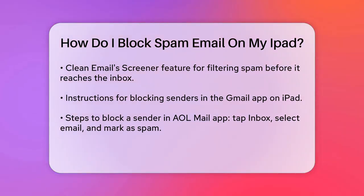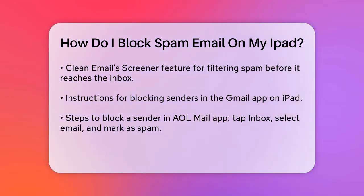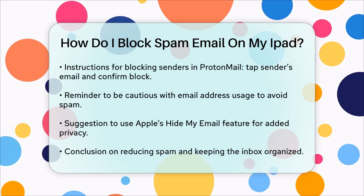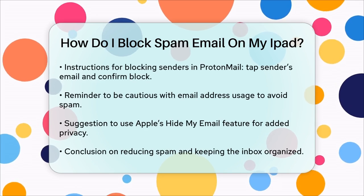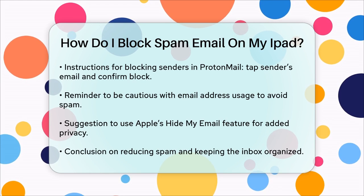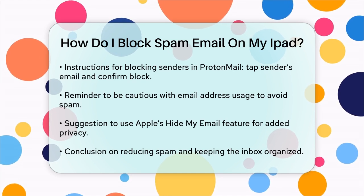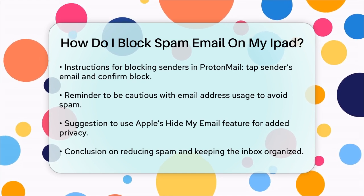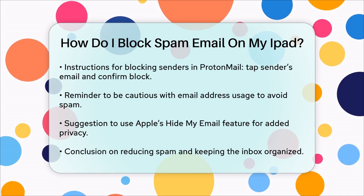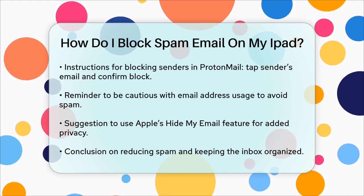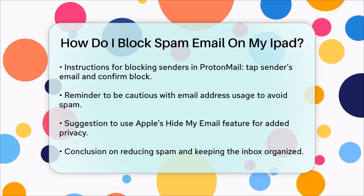For other email services like AOL Mail or ProtonMail, the steps are similar but specific to each app. For AOL Mail, open the AOL app, tap the Inbox, select the email from the sender you want to block, tap More at the bottom, and choose Mark as Spam. For ProtonMail, open the email, tap the sender's email address, select Block Messages from this sender, and confirm.